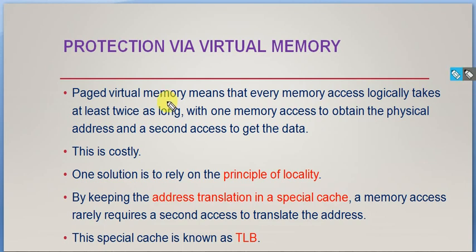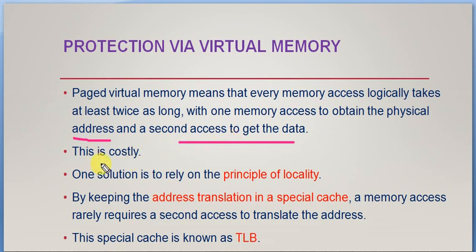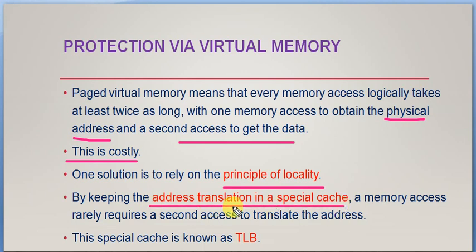With paged virtual memory, every memory access logically takes at least twice as long — one memory access to obtain the physical address and a second to get the data. This is a cost because we are doing two operations. One solution is to rely on the principle of locality by keeping a Translation Lookaside Buffer, which makes data access easier. Finding the physical address and accessing data separately can be avoided by reference to the TLB — if the data has already been referred to, it will be available in the TLB special cache memory.